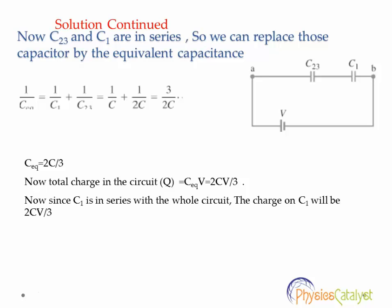Now we know that charge on a capacitor is given by Q equals CV. So the total charge in the circuit will be Q equals C equivalent times V. Here voltage potential difference is given as V. So it is 2CV by 3. Now since C1 is in series with the whole circuit, the charge on C1 will be 2CV by 3.